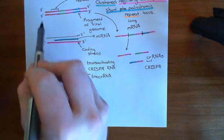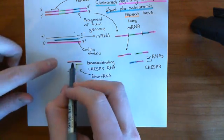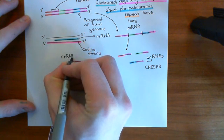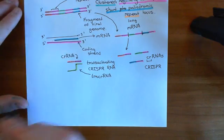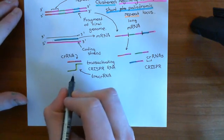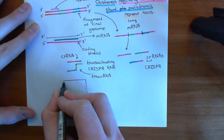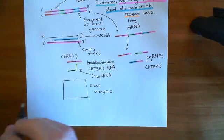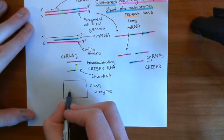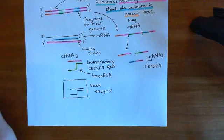The piece of mRNA that's complementary to a strand of the viral genome is still single-stranded. This complex of a crRNA bound to a complementary section on a tracrRNA is now going to associate with the Cas9 enzyme. So the CRISPR repeat portion and the tracrRNA bind or load into the Cas9 enzyme.